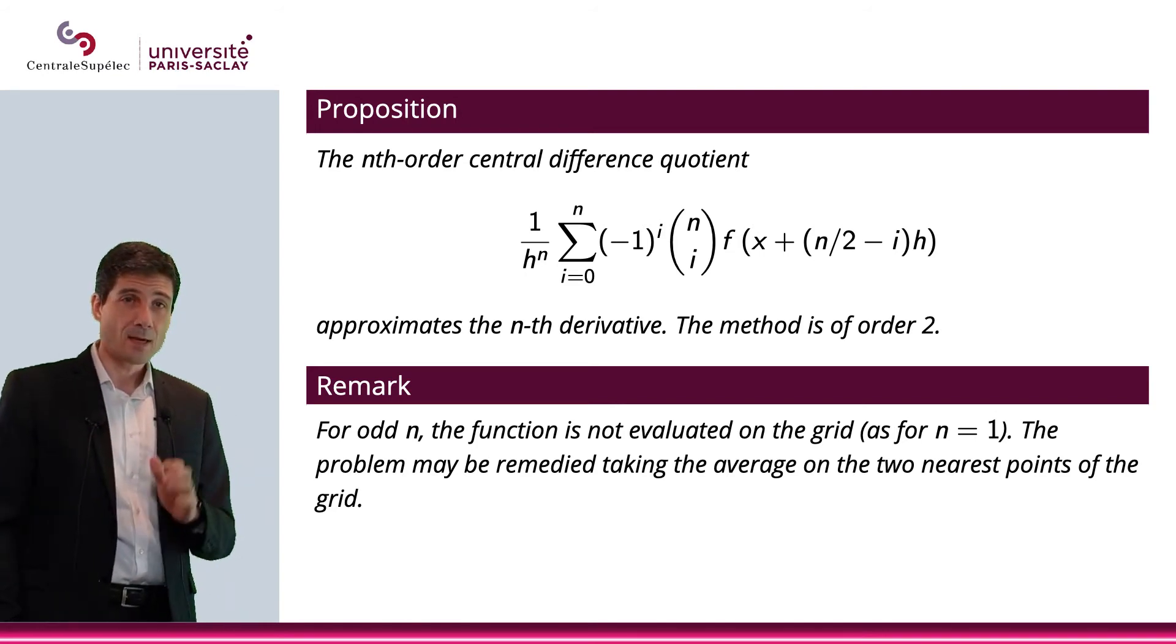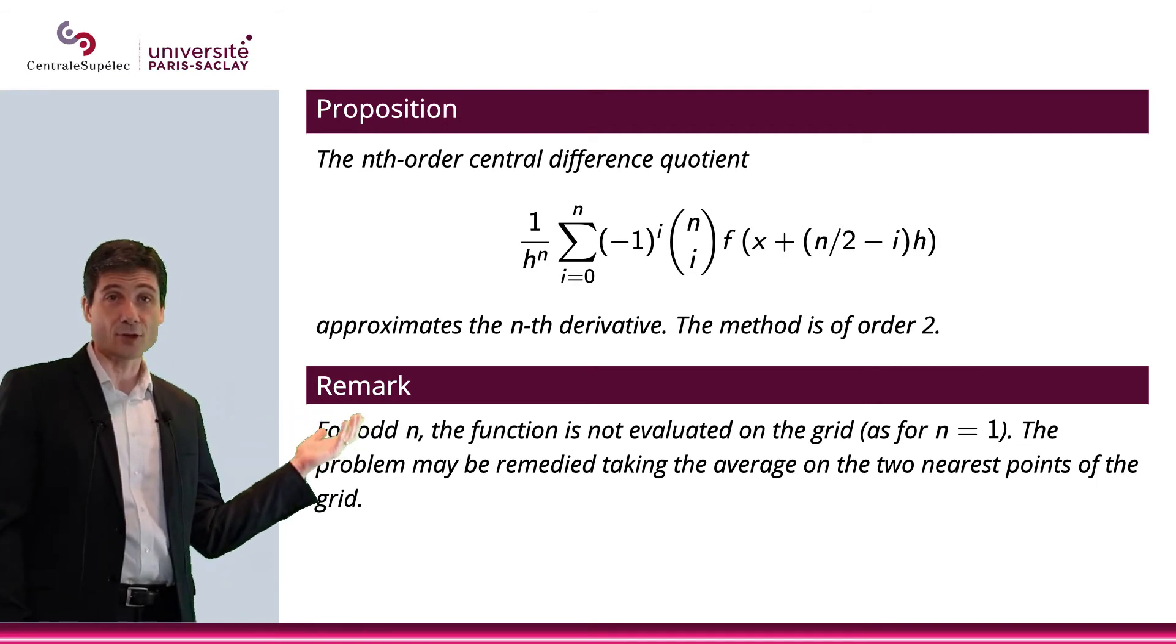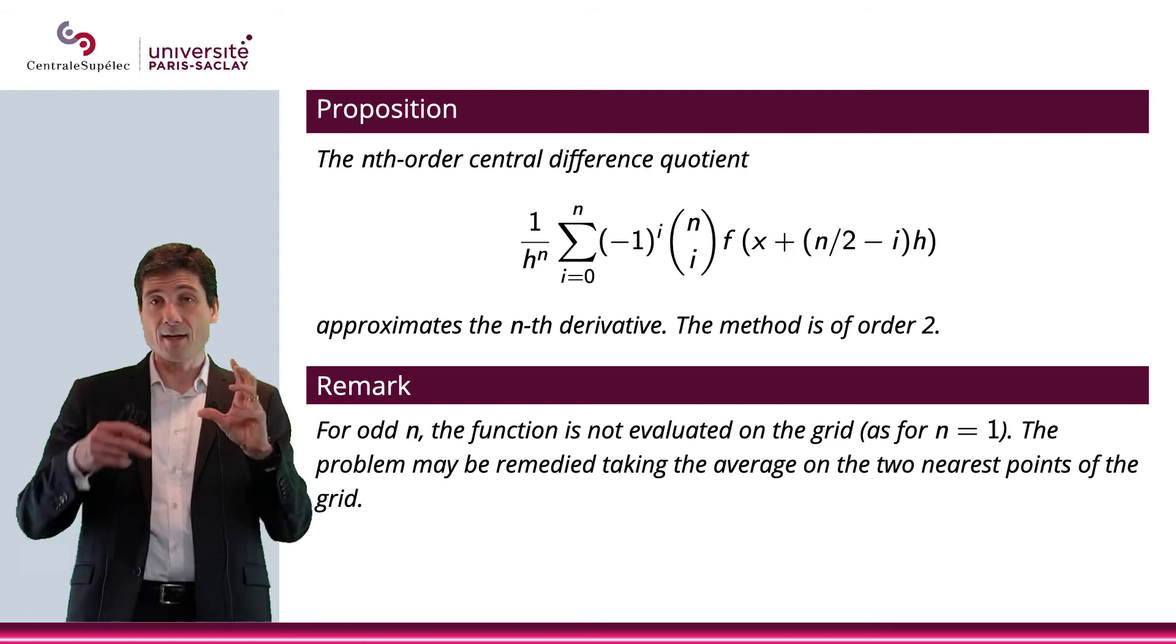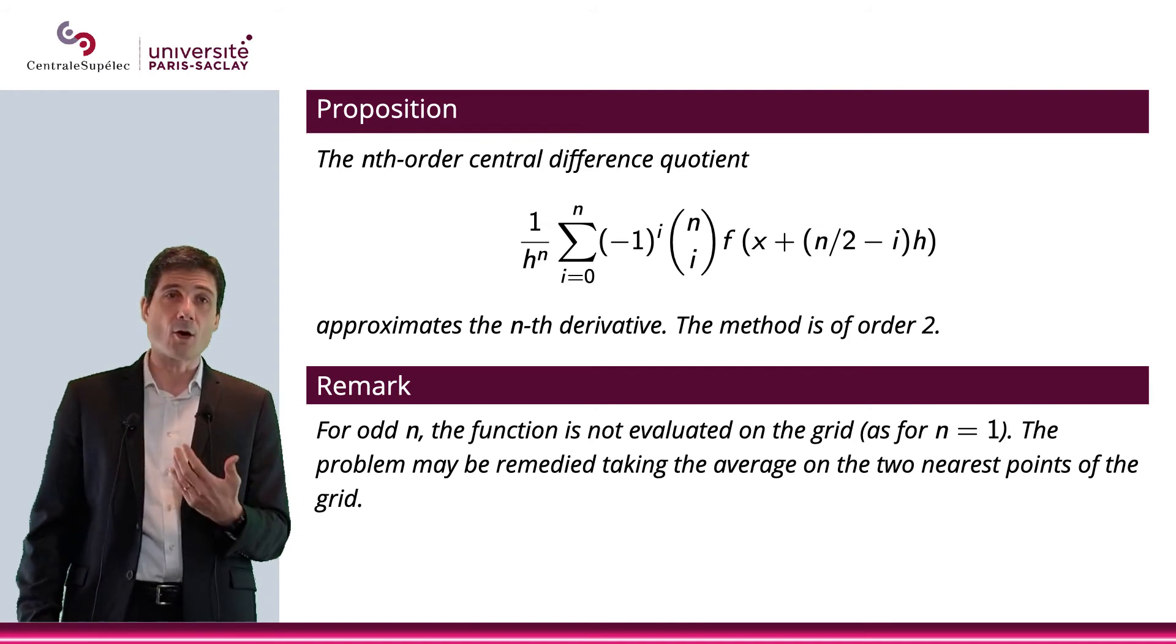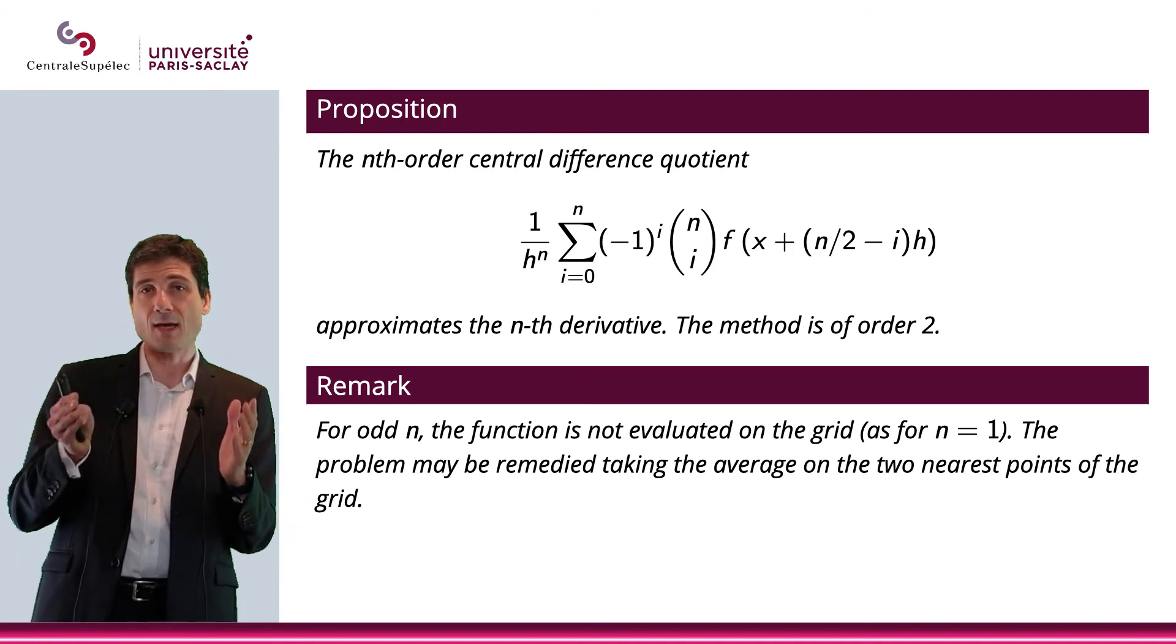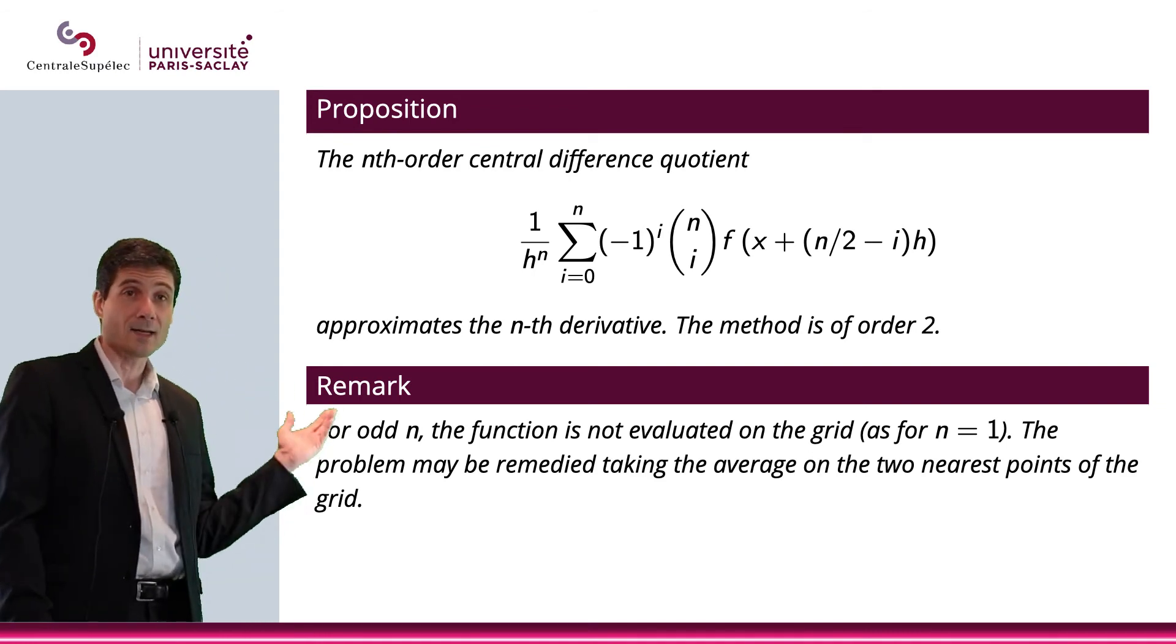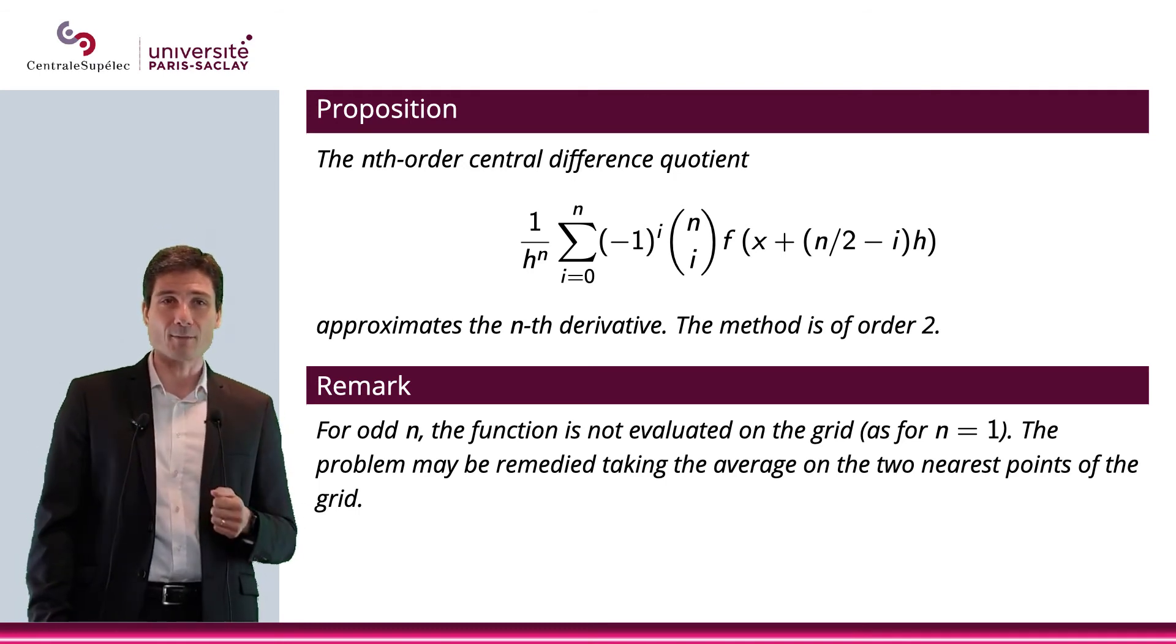You might have noticed that if n is odd, then n/2 is not an integer. Therefore, the point x + (n/2 - i)h is not going to fall on a grid point, so we'll need to do what we did before: approximate this value by taking the average between the point before and the point after. In fact, when n equals one, it's basically what we had for the first-order central difference quotient to approximate the first derivative.